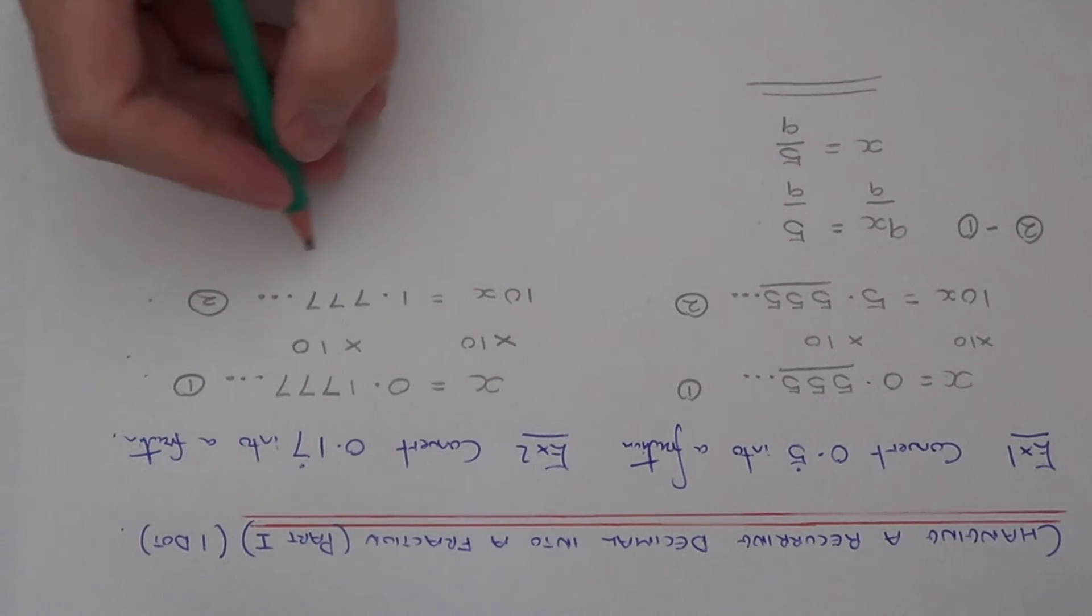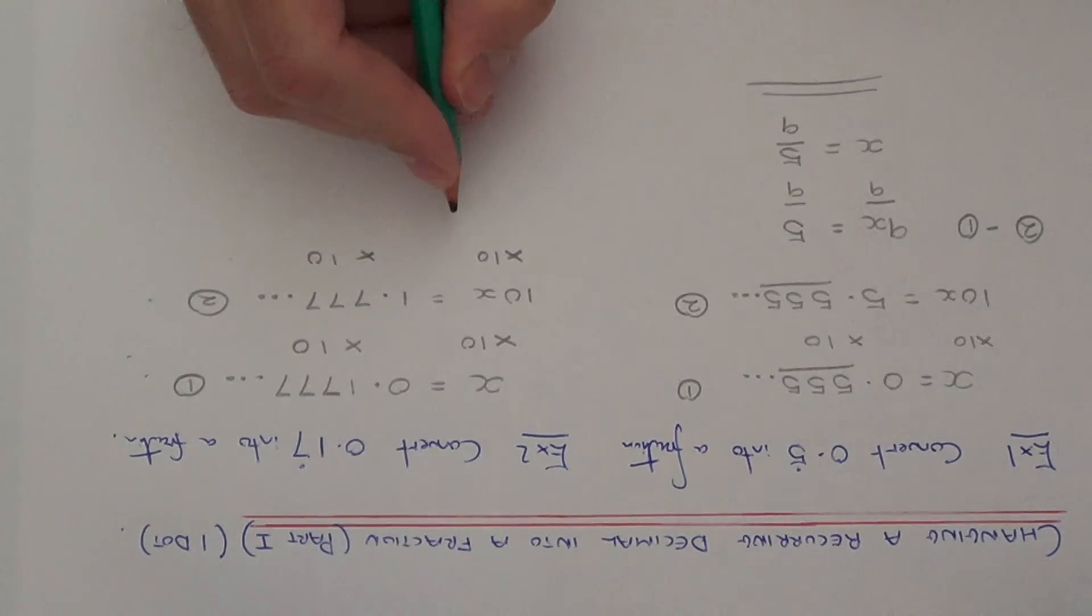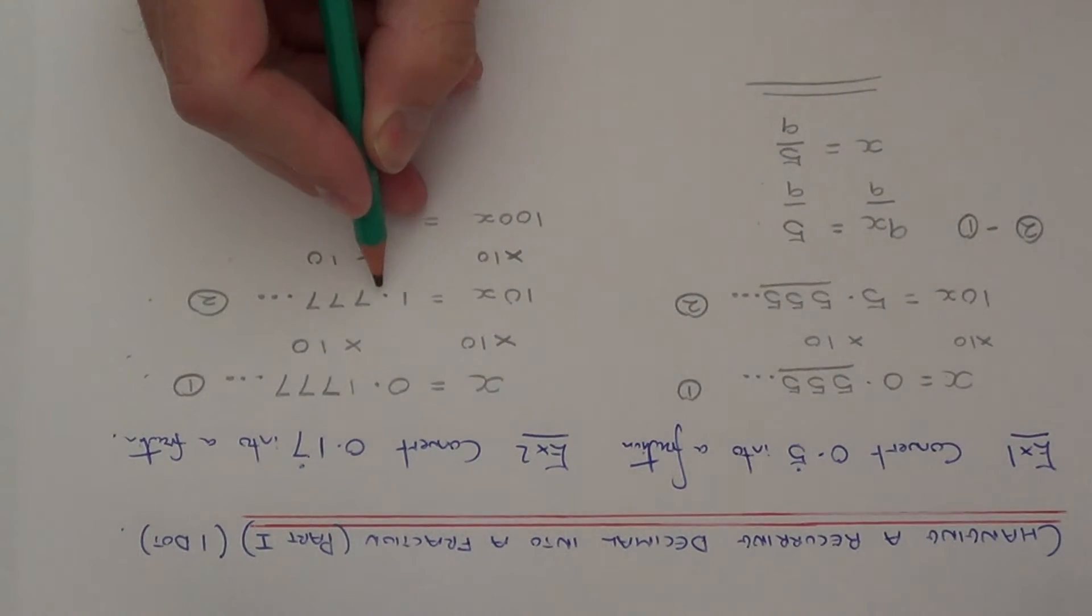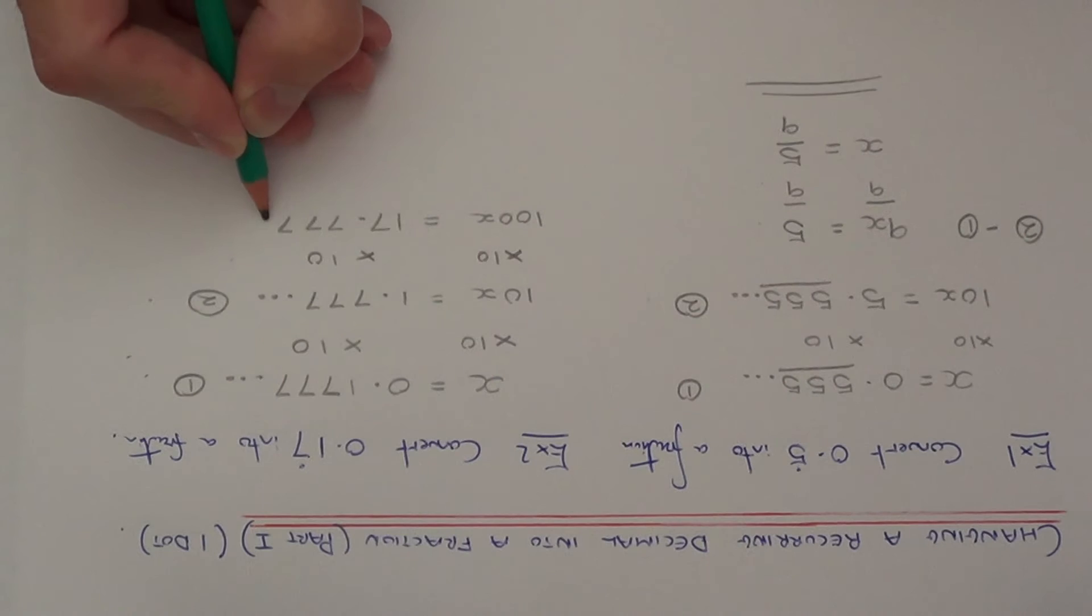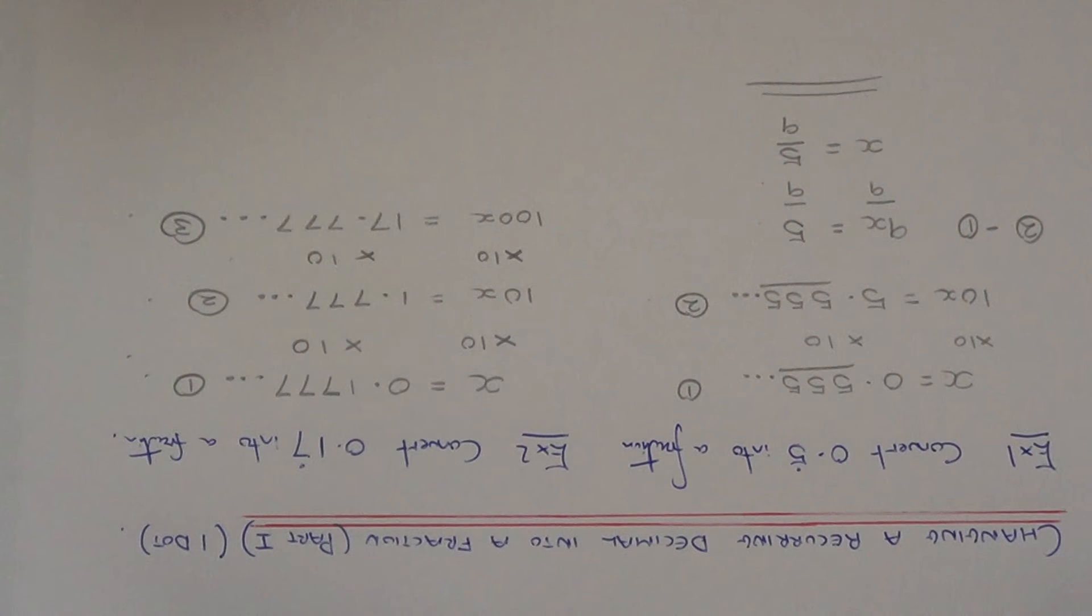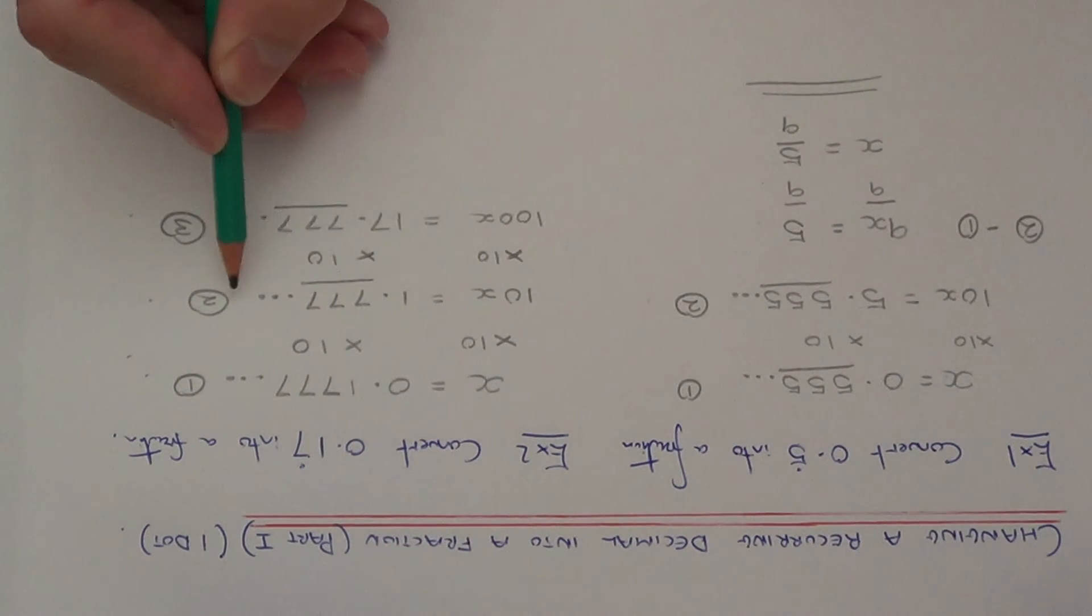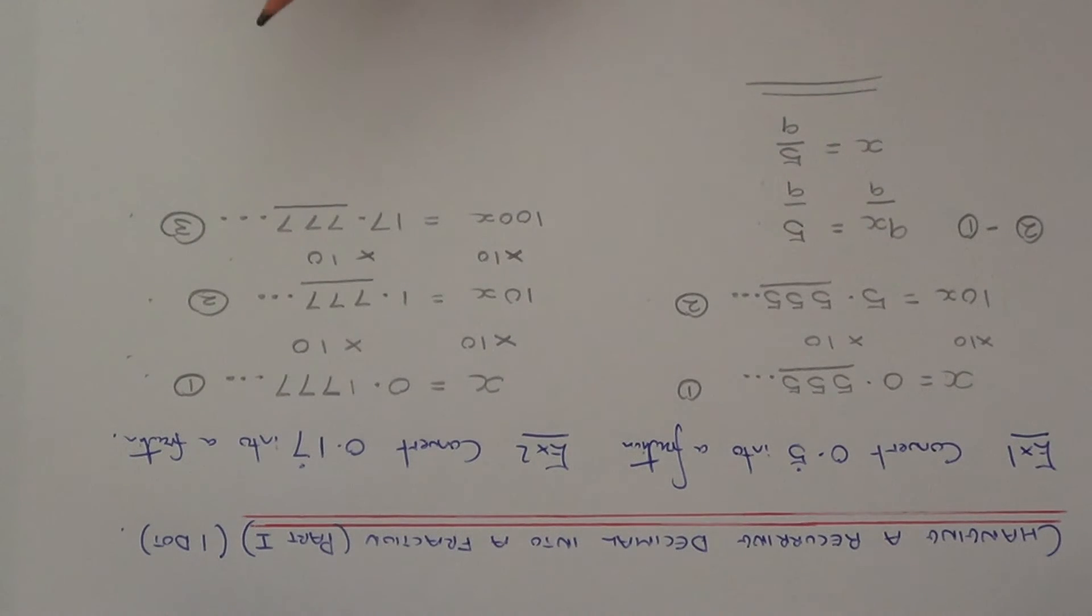So what I'm going to do instead is multiply both sides of the equation by 10 again. So 10x times 10 is 100x. And 1.777 times by 10 is 17.777. Let's call this equation 3. Now if you notice, the equation which I've just worked out, this decimal here the .777 matches the .777 on the second equation. So the bits after the decimal point are matching on both of these.